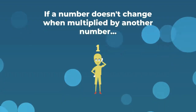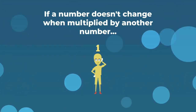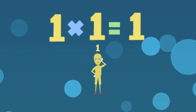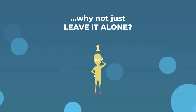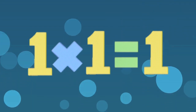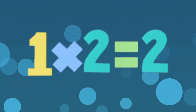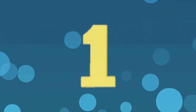Now my friend asked me, Freddie, if a number doesn't change when multiplied by another number, then why do we bother that number in the first place? Why not just leave it alone? Well I said, in order to understand multiplication, you need to see how a number or factor is repeated to find the answer or product. In multiplication, the number 1 is the only factor that doesn't change the number.